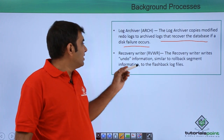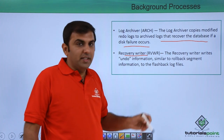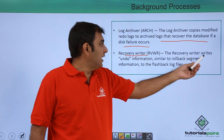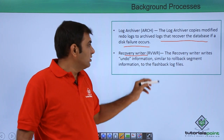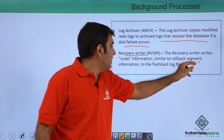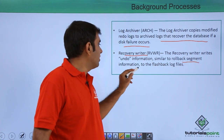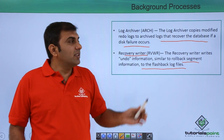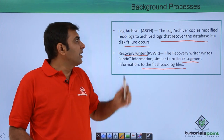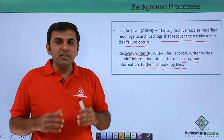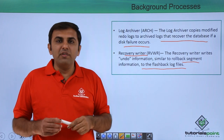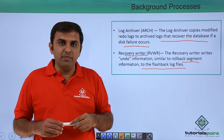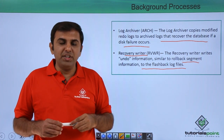The last one is the recovery writer (RVWR). The recovery writer writes undo information, similar to rollback segment information, to the flashback log. These are all your Oracle background processes. In this session we have discussed about the Oracle Database Architecture. Thank you.